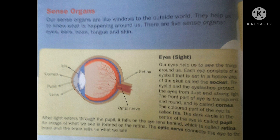The cornea is a bulging out part. The colored part of the eye that we can see in the center is called the iris. The dark circle in the center of the iris is called the pupil.